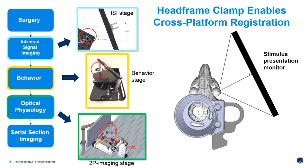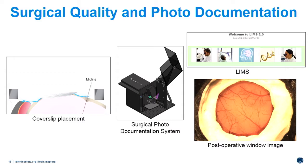After the head frame is secured, the craniotomy is made: we drill a small piece of skull away and replace it with a clear glass coverslip, which creates a flat surface for imaging through all cortical layers. The surgeons work to produce a clear and healthy brain, reducing brain swelling, preventing cortical damage, and keeping the brain hydrated and cool. A surgical photo documentation image is uploaded to LIMS, our laboratory information management system, for monitoring brain health throughout the pipeline. The animal spends about two weeks recovering from surgery before being handed off to the imaging team for ISI.